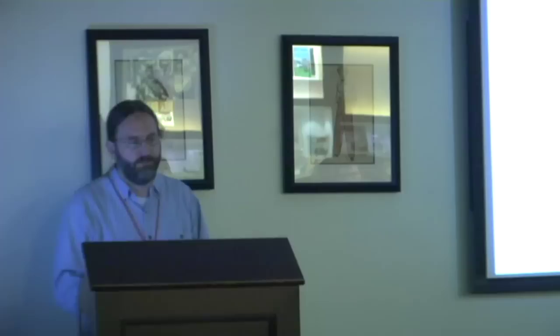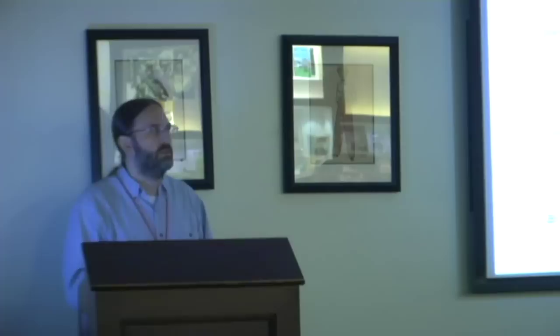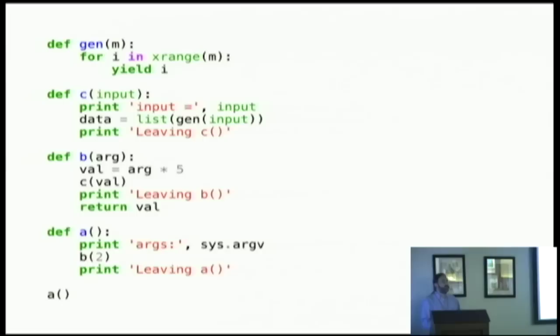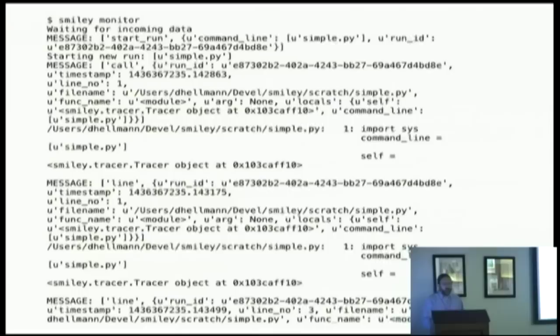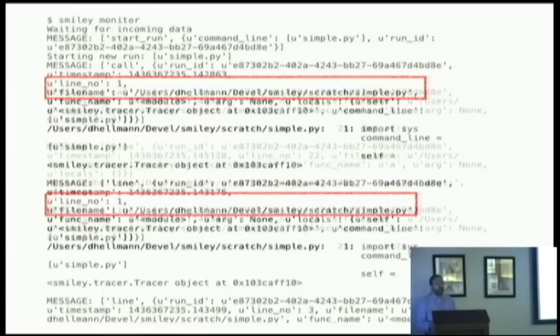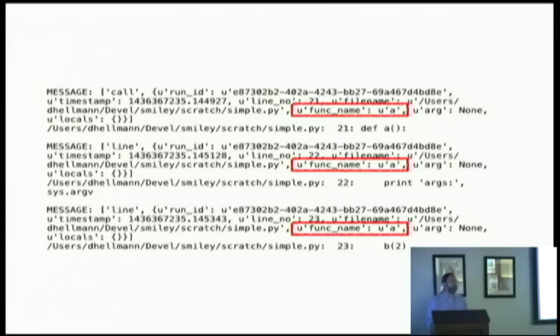To test Smiley at this point, I created a simple test script with a couple of functions that call each other, return some values, some loops, and a generator — just enough to give me something interesting to look at edge cases. In one terminal I run 'smiley run simple.py' and in another I run 'smiley monitor' and it prints all the data coming across the wire as the program runs. It's not especially readable because I didn't do a great job of formatting it, but it includes event types, file names, line numbers, and function names — all the data I care about, even if it's formatted somewhat poorly.